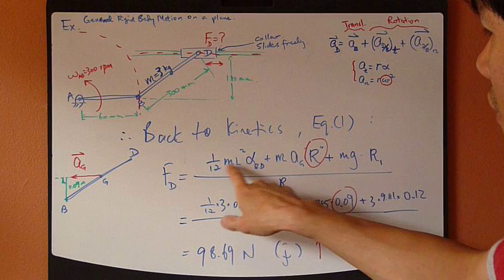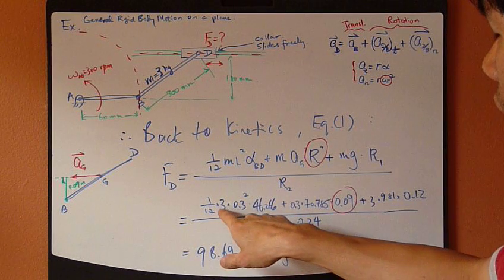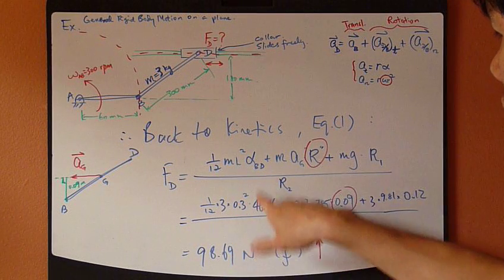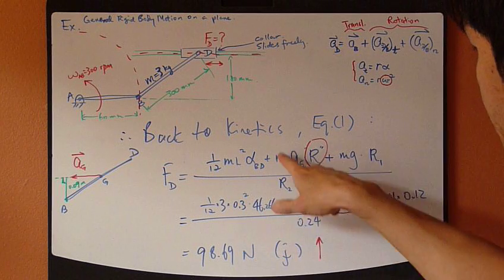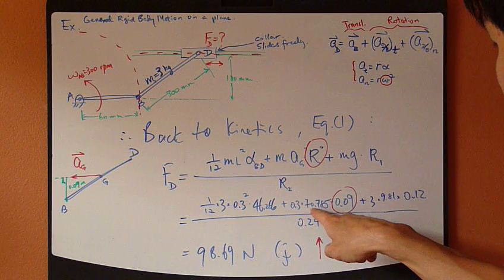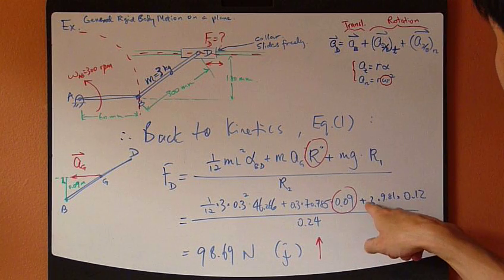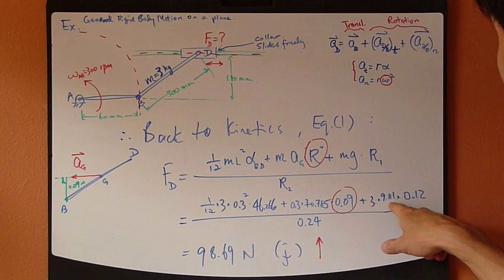So this is I, which is 1/12 mL squared, 1/12 mL squared, alpha, just been found, 0.3, AG had just been found before, and then MGR1.